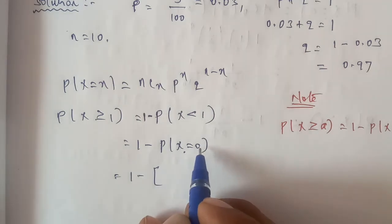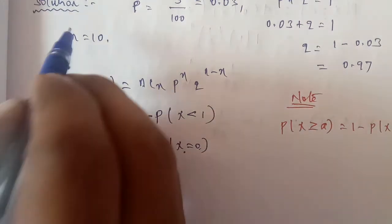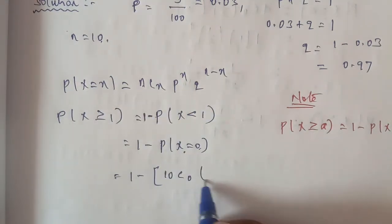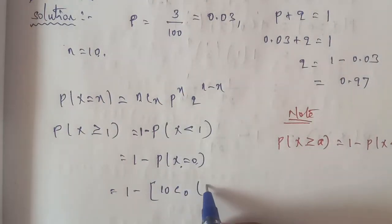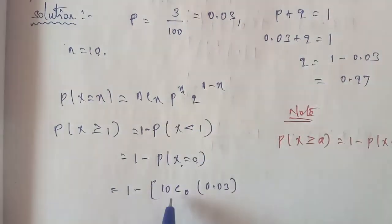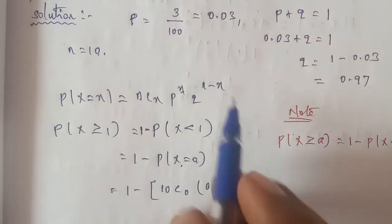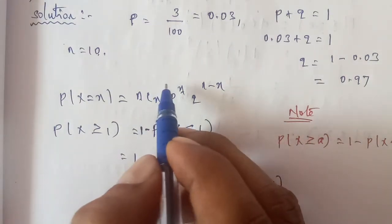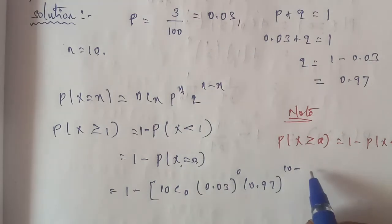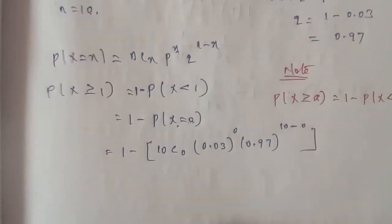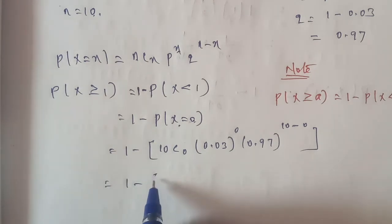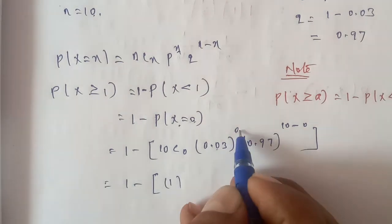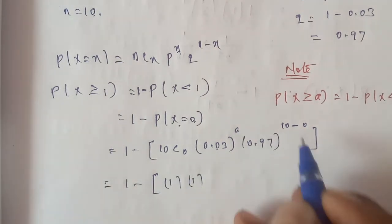Therefore, 1 minus P of X equals 0. With X value 0 and n equal to 10, we calculate 10C0 times 0.03 to the power 0 times 0.97 to the power of 10 minus 0, which is 10. We know 10C0 equals 1 and anything to the power 0 is also 1, so this simplifies to 0.97 to the power 10, giving 0.7374.